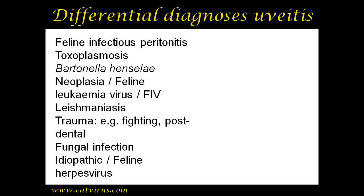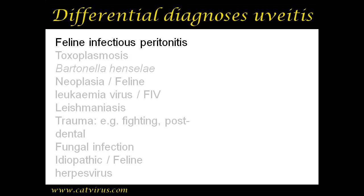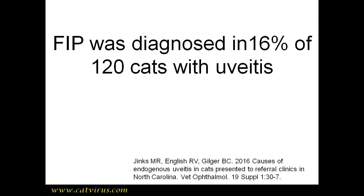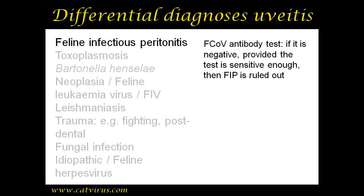We will now go through the list of differential diagnoses of uveitis that we arrived at in the third video of this series - a list of differentials of uveitis only, not all possible clinical signs of a cat with FIP. First on the list was FIP, which Jinx et al. found to be the cause of around 16 of 120 cats with uveitis in the North Carolina Veterinary School ophthalmology referral service. FIP is a major cause of feline uveitis, but we've already found it was unlikely in Tommy's case. Our in-house test was a rapid immunomigration, and we could double check the coronavirus antibody test at the referral laboratory if we doubted its sensitivity or if it had given a ghost line.